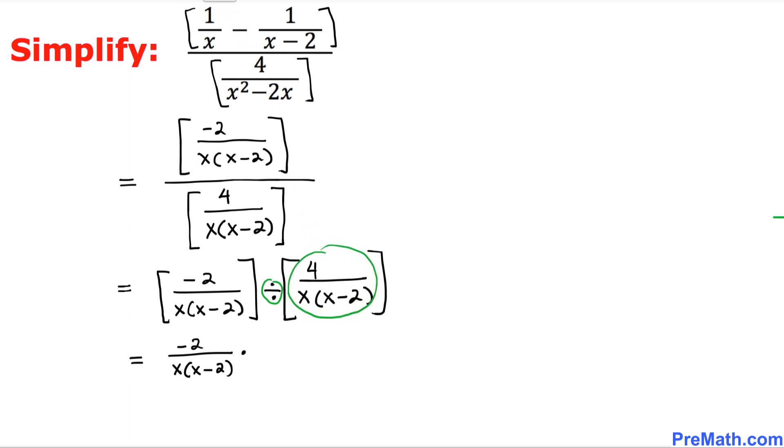And this right-hand side, this part, we are going to flip it over, so this could be written as x times x minus two divided by four. And in this next step, as we can see, this x and x minus two cancels out with this x times x minus two.